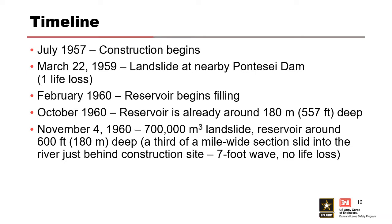That nearby landslide happened, one person lost their life, and so they started having a little more thought about whether this could actually be a problem. Nonetheless, they started filling the reservoir in 1960. By October of 1960, in about six months, the reservoir was already around 557 feet deep. Going on from October to November 1960, the project had its first landslide. At that time the reservoir was around 600 feet deep, and a third of a mile wide slid off — about six football fields.